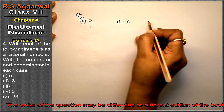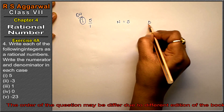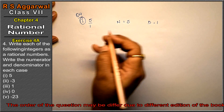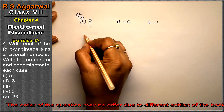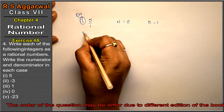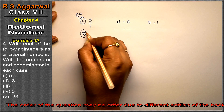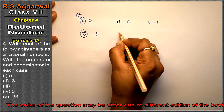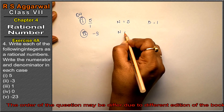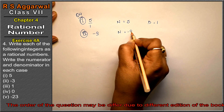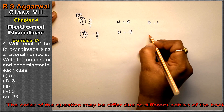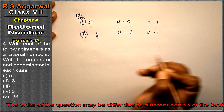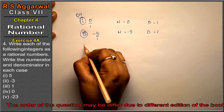The denominator is 1. Second part is minus 3, so the numerator is minus 3, and since there is nothing below, we write 1 — that means the denominator is 1.